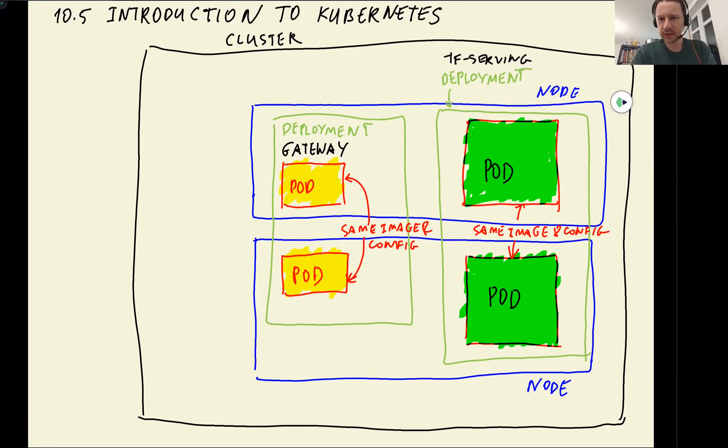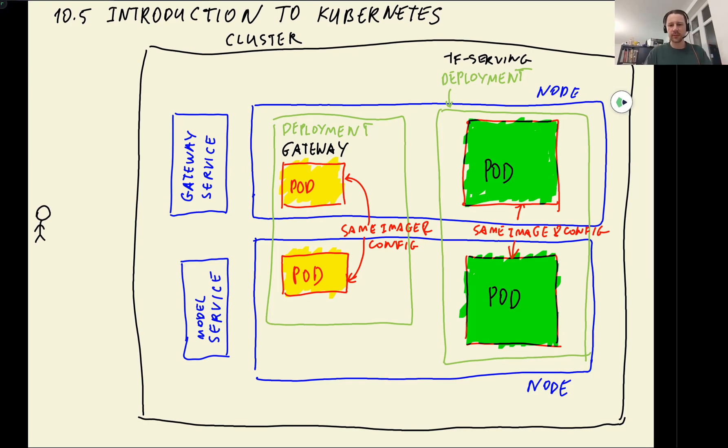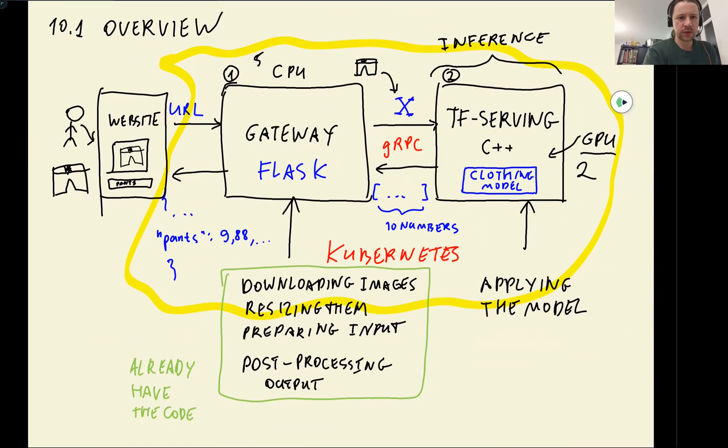And then we have things that are called services. Let's say we have two services in our example. The first one is the gateway service. And then we have our TensorFlow model service. The service is some sort of entry point to our deployment. So let's say we have our user and the user, well, it happens indirectly, like here.